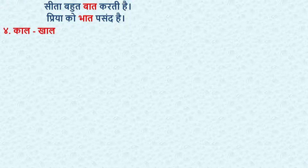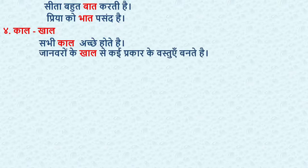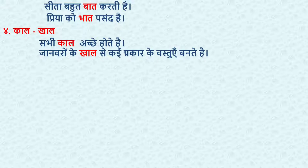Next, 'Kal' means 'time/samay' and 'Khal' means 'skin/chamdi.' Sentences: Sabhi kal achhe hote hain (Every time is a good time); Janvaro ke khal se kai prakaar ki vastuye banti hain (Many types of items are made from animal skin). You can frame any sentence of your choice.